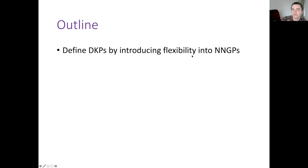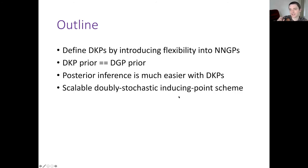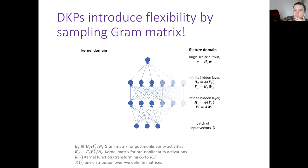The outline for this section: I'll start by defining deep kernel processes by introducing flexibility into NNGPs; then discuss how the deep kernel process prior is equivalent to models like deep Gaussian processes; then talk about why posterior inference should be much easier with deep kernel processes; then briefly cover our scalable doubly stochastic variational inducing point inference scheme; and finally show some results.